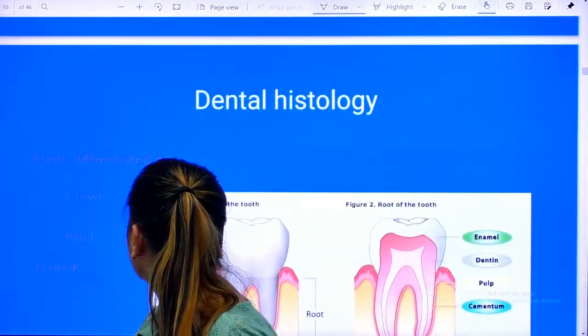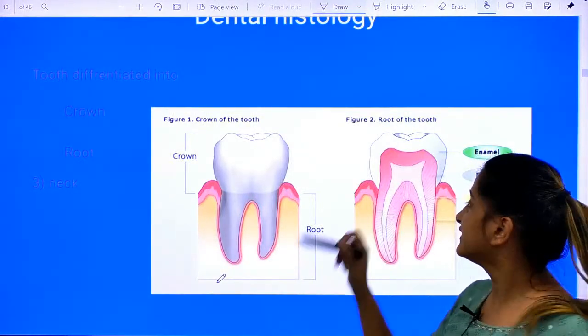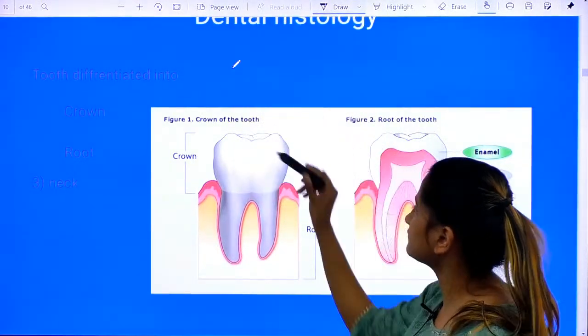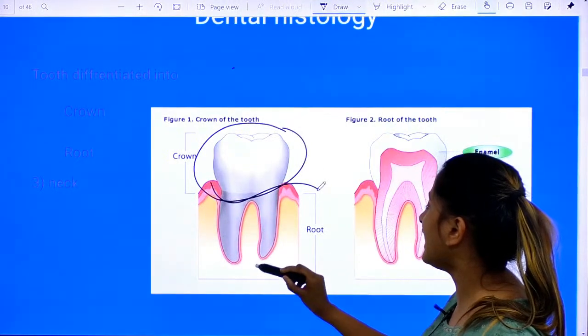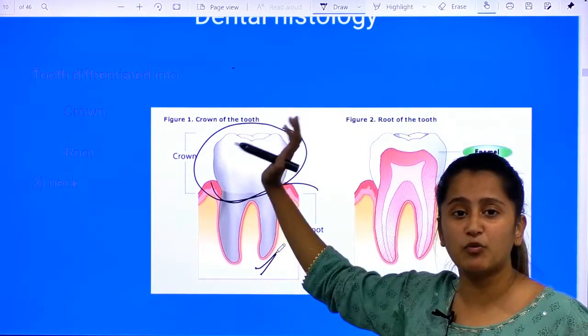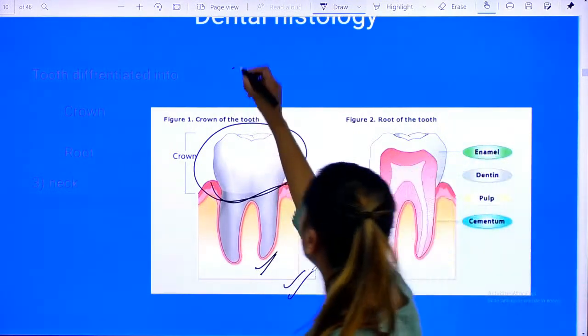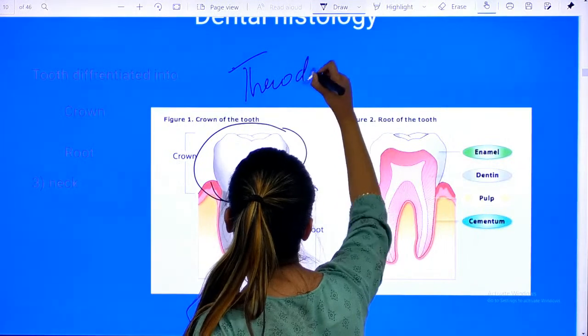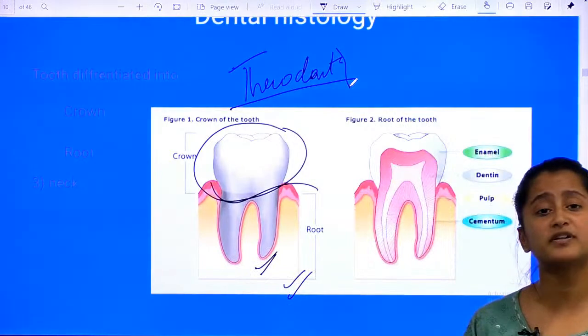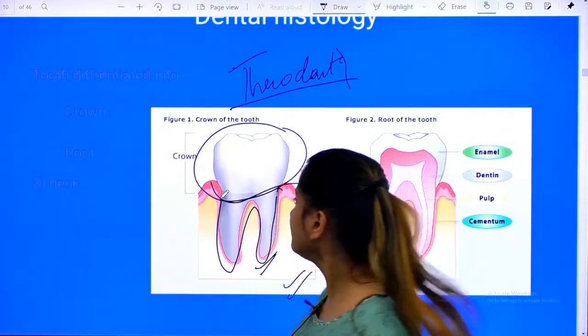Now we must go for the histology. The tooth is basically divided into the crown part, the neck part, and the root. This type of arrangement is known as the thecodont arrangement. What is thecodont arrangement? The root is embedded in the bony socket.